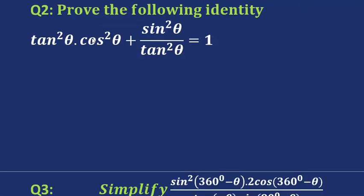Question 2. We are asked to prove an identity. So we want to prove that the left hand side is equal to 1. Let's start simplifying, and remember we always want to write tangent as sine over cosine.